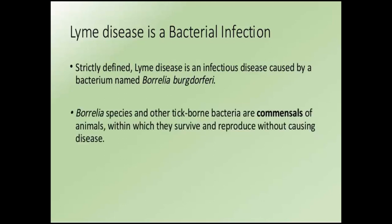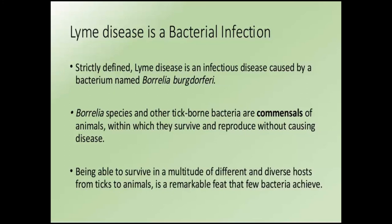As far as their lifestyle is concerned, Borrelia and other species are commensals, which means they want to get along with their hosts. These are zoonotic types of bacteria — they live in animals, they survive and reproduce in animals in many cases without causing any disease, such as in mice. They are able to do this in a multitude of different hosts, including ticks, which are arachnids, surviving all these different immune responses — a remarkable feat that very few bacteria are able to achieve.